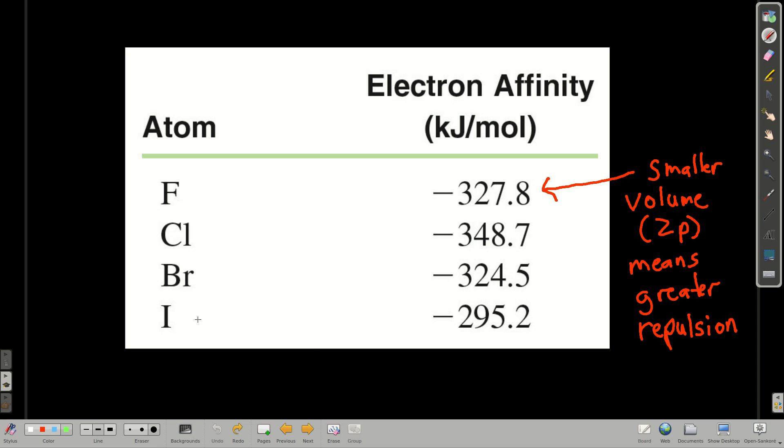If we look at what happens up and down the column, the halogens, in general, these are the electron affinities for fluorine, chlorine, bromine, and iodine going down the column. Except for fluorine, it gets more negative. The electron affinity gets more negative as you go up the column because we know the effective nuclear charge increases as you go up the column.